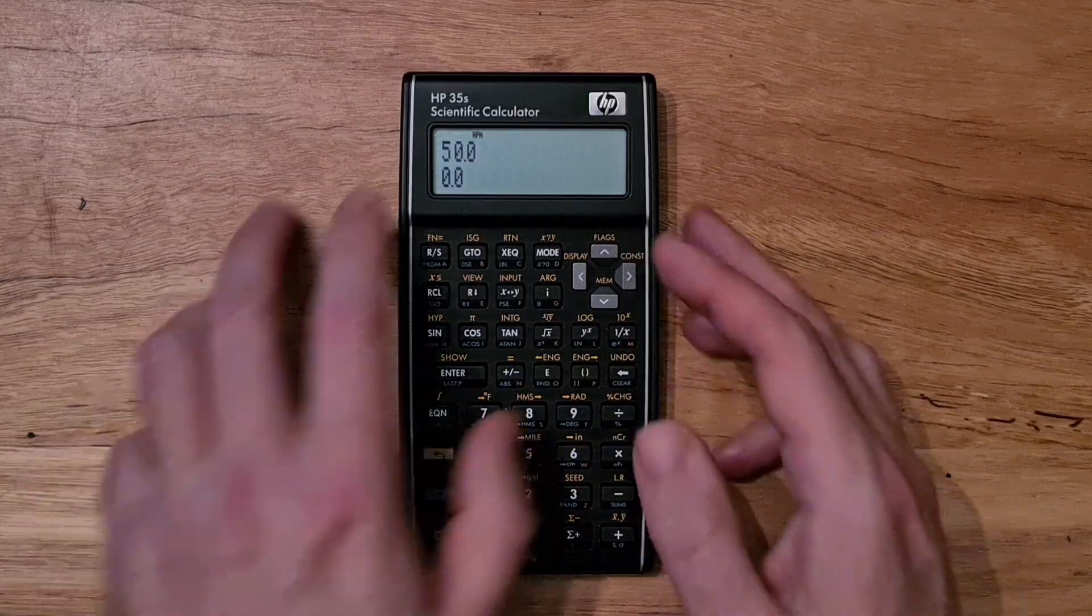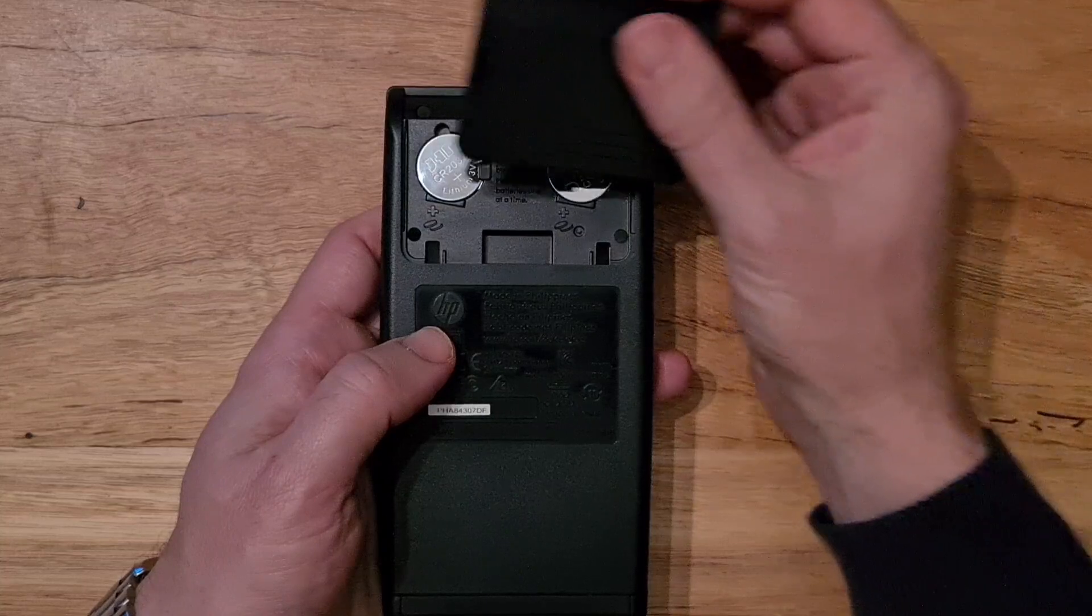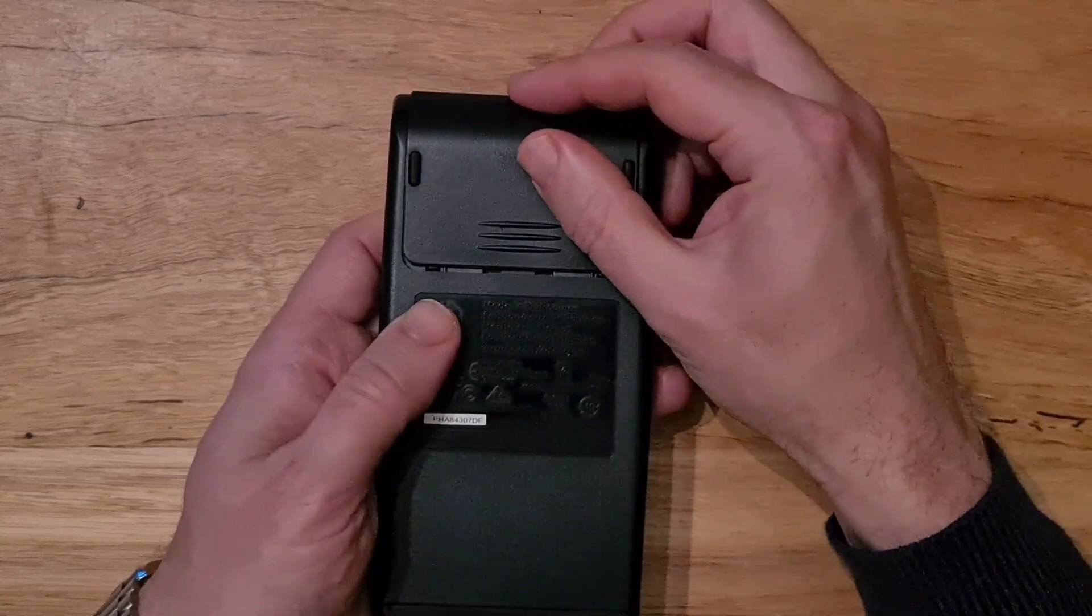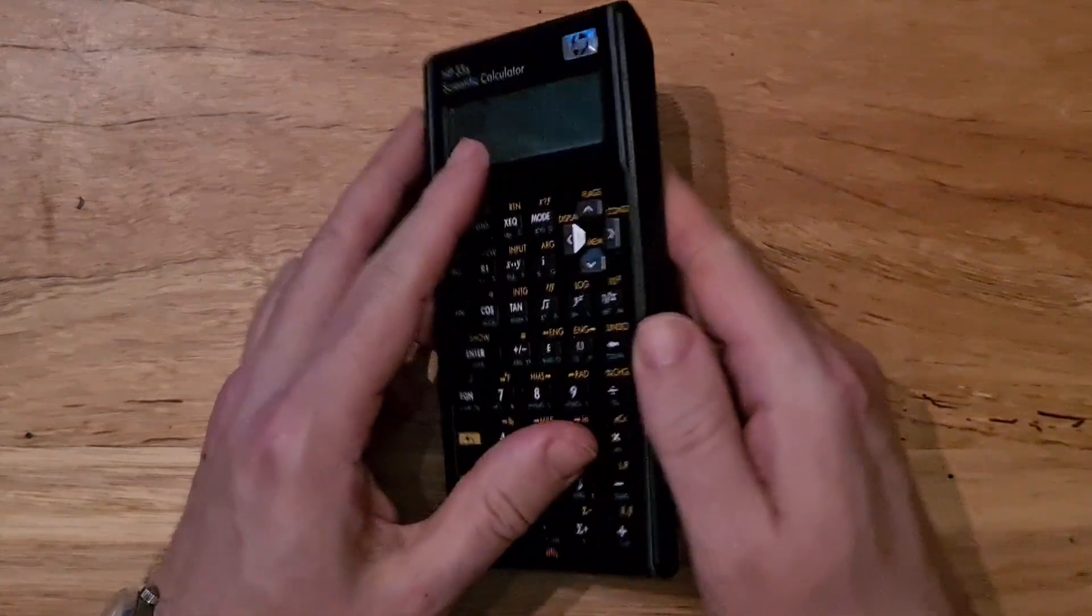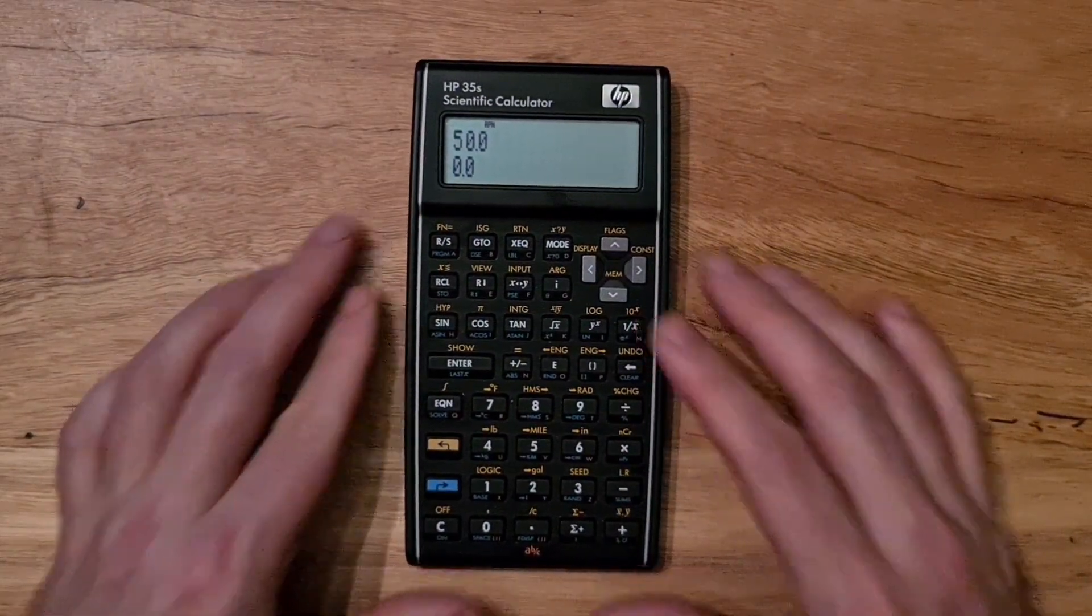It uses two coin cell batteries. When these are running low, it's important to swap them out one by one. Otherwise, programs and variables in persistent storage will be lost.